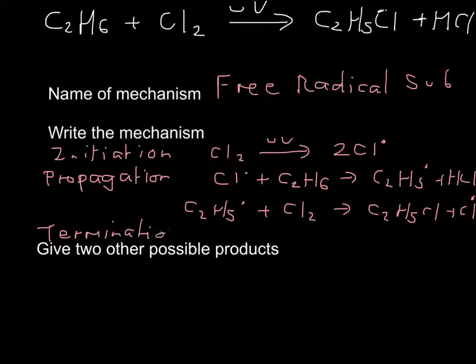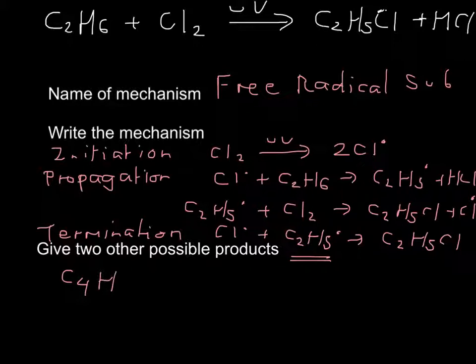The final step is termination. Termination always involves two free radicals coming together. So use two that we've got: C2H5 dot plus Cl dot gives you C2H5Cl. In terms of your other possible products, you can have multiple substitution occur. But also two of these radicals could come together. So one possible product would be C4H10 from those two free radicals coming together. But you could also have multiple substitution of the chlorine. So another one could be C2H4Cl2.